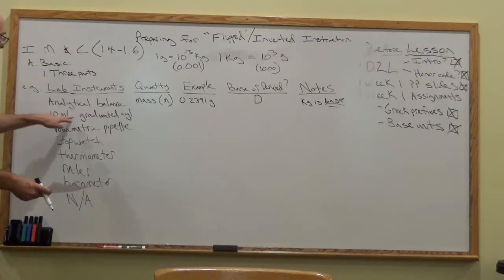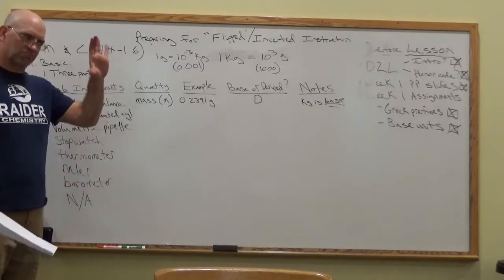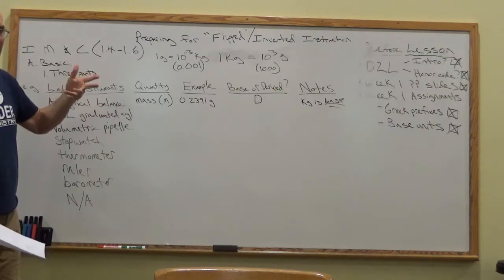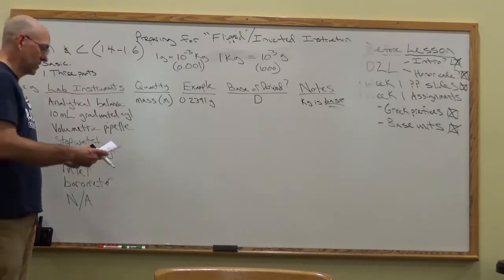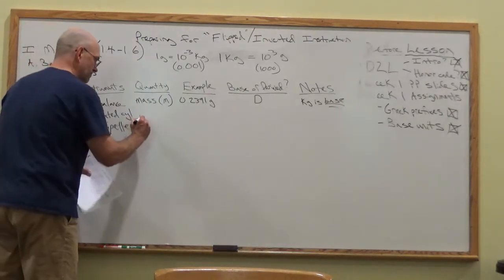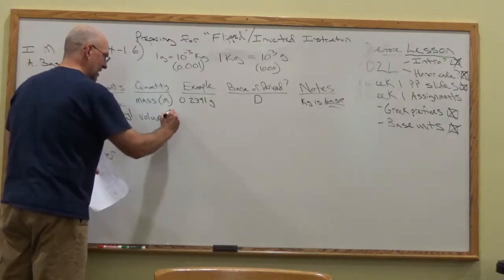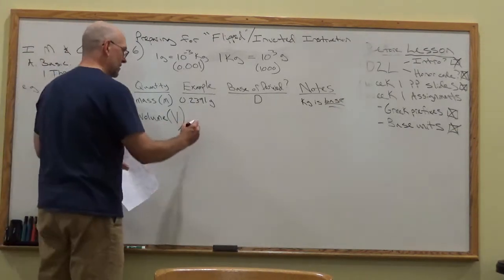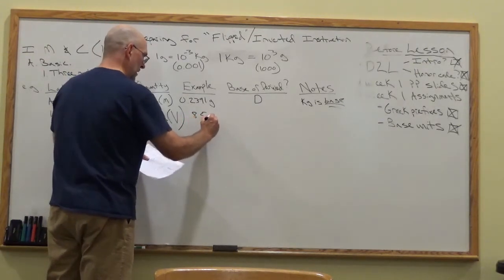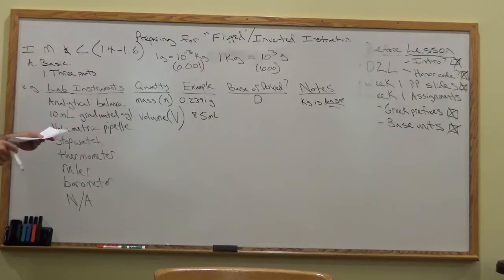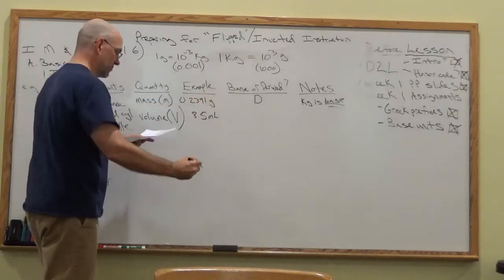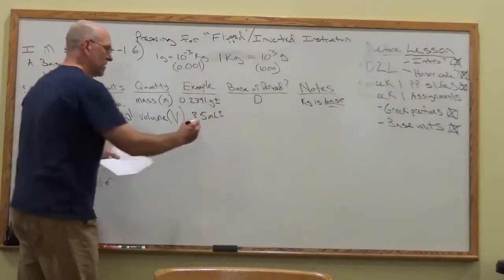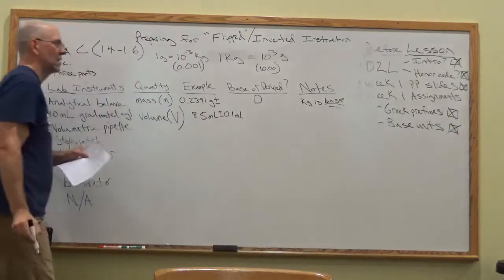Another piece of equipment common in the lab is a 10-milliliter graduated cylinder — a tall glass cylinder with graduation marks on the side. It's actually a pretty poor way of measuring volume because a lot of the water and solution remains stuck to the sides. It measures volume, which has the abbreviation capital V — lowercase v is velocity, which we don't use very often. The error associated with a graduated cylinder is plus or minus about one-tenth of a milliliter.